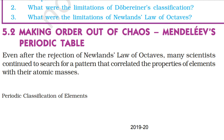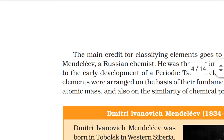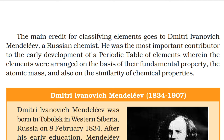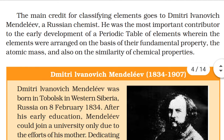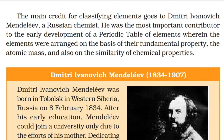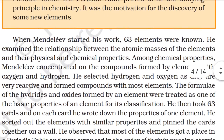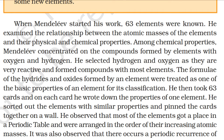Making order out of chaos — Mendeleev's Periodic Table: Even after the rejection of Newlands' Law of Octaves, many scientists continued to search for a pattern correlating the properties of elements with their atomic masses. The main credit for classifying elements goes to Dmitri Ivanovich Mendeleev, a Russian chemist and the most important contributor to the early development of a periodic table, wherein elements were arranged on the basis of atomic mass and similarity of chemical properties. When Mendeleev started his work, 63 elements were known; he examined the relationship between the atomic masses of the elements and their physical and chemical properties.